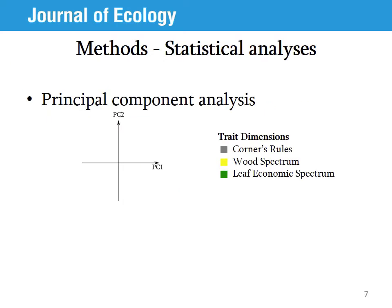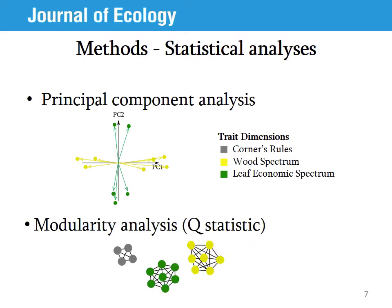I used two statistical approaches to test for the independence of trait dimensions. First, I used a principal component analysis — a dimension reduction method that identifies the main axes of variation that are independent from each other, or orthogonal, in a multivariate trait space. If trait dimensions are independent, we would expect traits from each dimension to group together along different principal components — for example, wood spectrum traits aligning along PC1 and leaf economic spectrum traits along PC2. Second, I ran a modularity analysis, a type of network analysis that tests for the independence of modules defined a priori. It reports a Q statistic, which gives the ratio of correlations within modules relative to those among modules and compares that ratio to a null model. If the modules are independent, the Q statistic will be positive, meaning the fraction of intramodule correlations is larger than expected by chance.